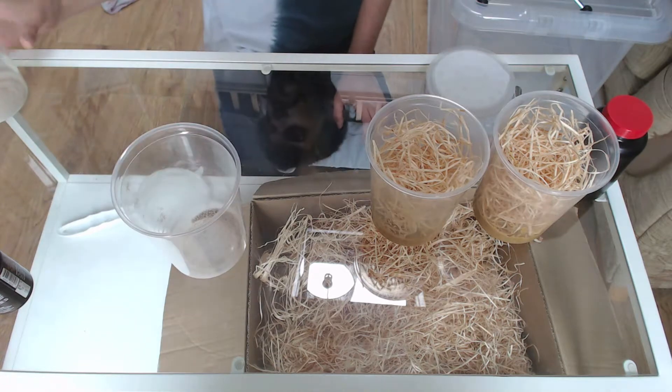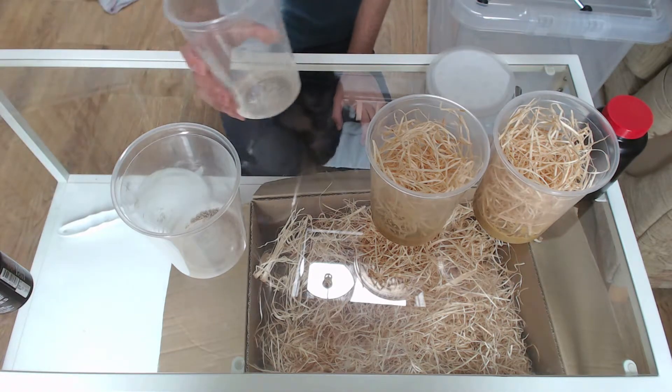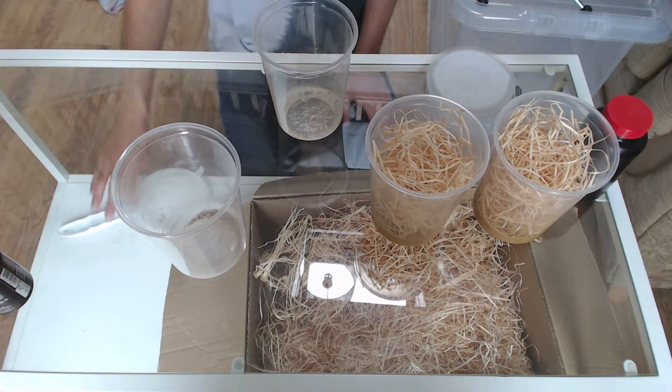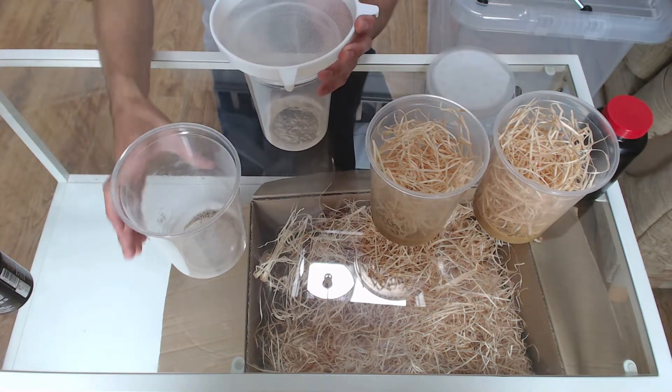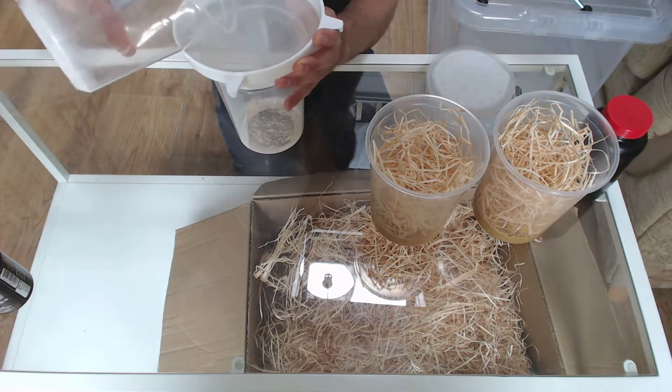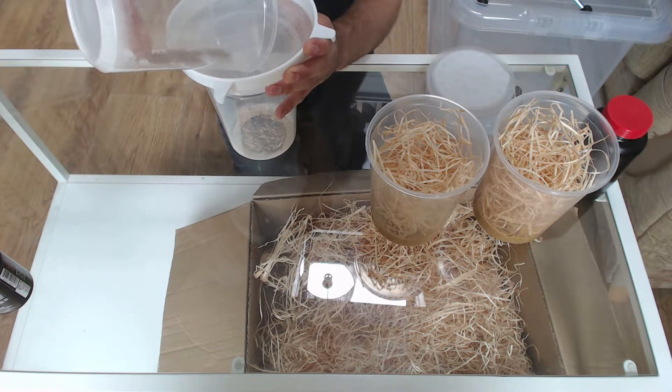So what I tend to do is I get another deli cup and a sieve. I'll put the sieve over the top of the deli cup. And what we do is we just tip our flies into the sieve.